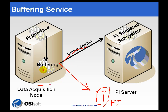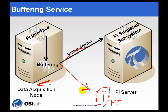If instead of the PI Buffer Subsystem you use the API Buffer Server, that does not do data compression on the Interface Node. It sends raw, uncompressed data to both servers. Since data compression depends on the order in which you get certain data, the same raw data sent to two different PI Servers with slightly different current values or most recent archive values could actually end up with slightly different stored data.